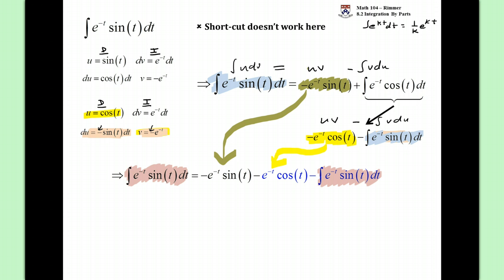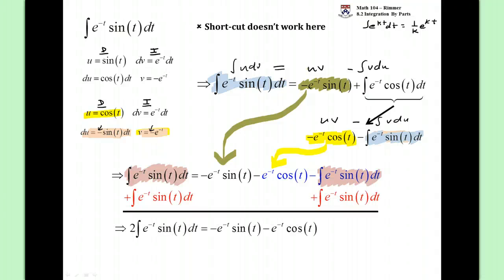But they don't cancel out. What happens is that we're going to solve this as basically an algebra question from here on out. So, if I add it over to the other side, then all of a sudden I have two of them. But these other parts don't have an integral on it.